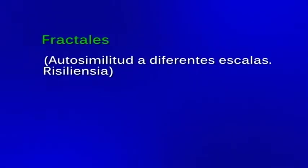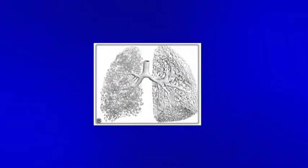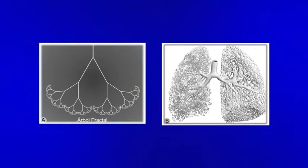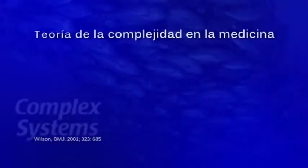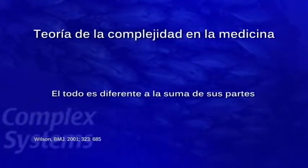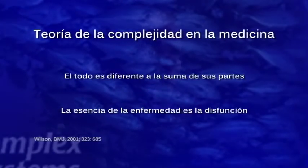Los fractales son extraordinariamente eficientes en transportación e intercambio, y la anatomía humana está llena de fractales. Nuestros órganos mayores son fractales; quizá el ejemplo más claro es el pulmón, en sus dos aspectos: los bronquios se dividen miles de veces y la circulación pulmonar así lo hace. ¿Qué nos aporta la complejidad a la medicina? Que todo es diferente a la suma de sus partes, y que la esencia de la enfermedad no es la lesión sino la disfunción: si tenemos lesión sin disfunción no tenemos enfermedad, pero si tenemos disfunción, haya o no lesión, sí tenemos enfermedad.